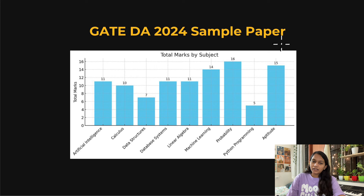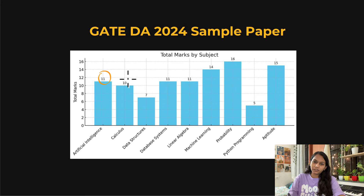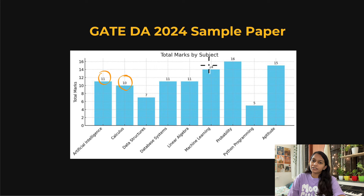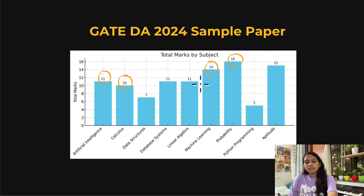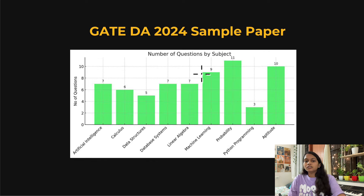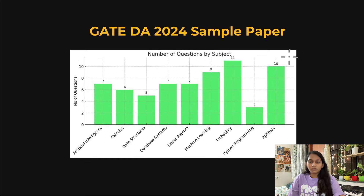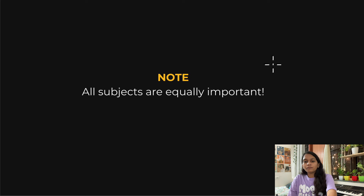In the sample paper released last year, from AI there were 11 marks, from calculus there were 10 marks. Machine learning and probability had the highest weightage — machine learning was 14 marks and probability was 16 marks. This slide also shows the number of questions from each subject in the sample paper.